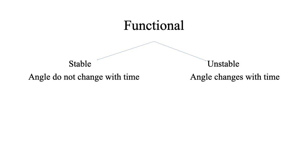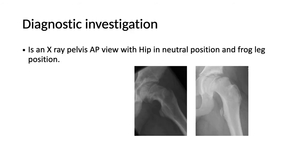Functionally, if the slip increases with time it is called unstable; if it does not change with time it is called stable. The diagnostic investigation is an X-ray of the pelvis in AP view with the hip in neutral position, and in the frog-leg position to get the lateral view. The Southwick angles are drawn to demonstrate the degree of inferior and posterior slip.